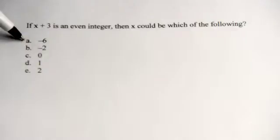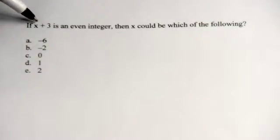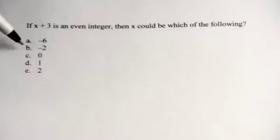So let's try choice A. Could x be negative 6? Well when we plug negative 6 in, negative 6 plus 3 is negative 3. That's not an even integer. So we cross off choice A and we go down the list.